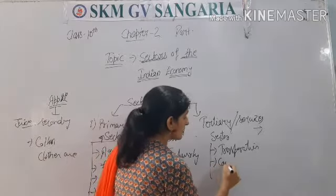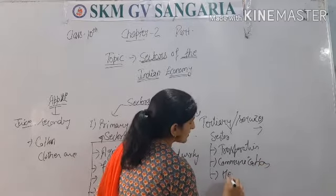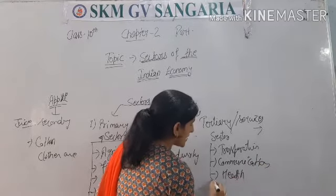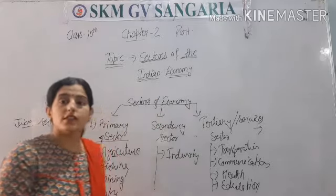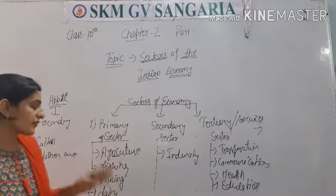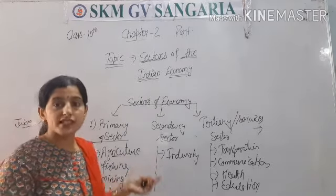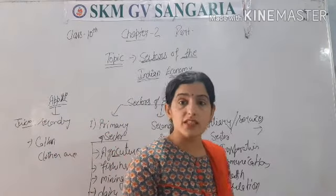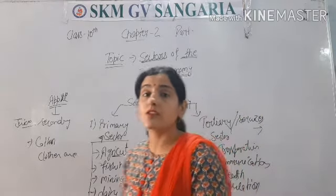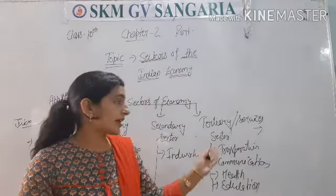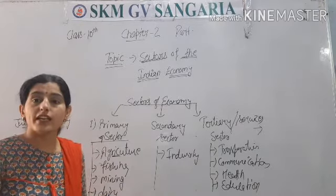Services such as transportation, communication, road facilities, health facilities, and education — all these activities are included in the tertiary or service sector. So to summarize: basic activities like agriculture, fishing, and mining are included in the primary sector; goods manufacturing and industries are in the secondary sector; and communication, transportation, and all types of services — like services of a washerman or plumber — are included in the tertiary or service sector. These are the three sectors of the Indian economy.